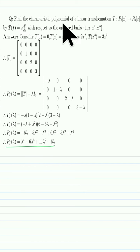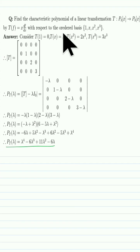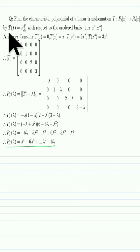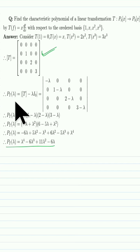Example 2: Find the characteristic polynomial of a linear transformation T from P_3(x) to P_3(x), defined by T(f(x)) = x times the derivative of f(x), with ordered basis {1, x, x^2, x^3}. We compute T(1), T(x), T(x^2), T(x^3) to find the matrix representation of T. Then, by definition, the characteristic polynomial of T with variable lambda is the determinant of (matrix minus lambda I_4).